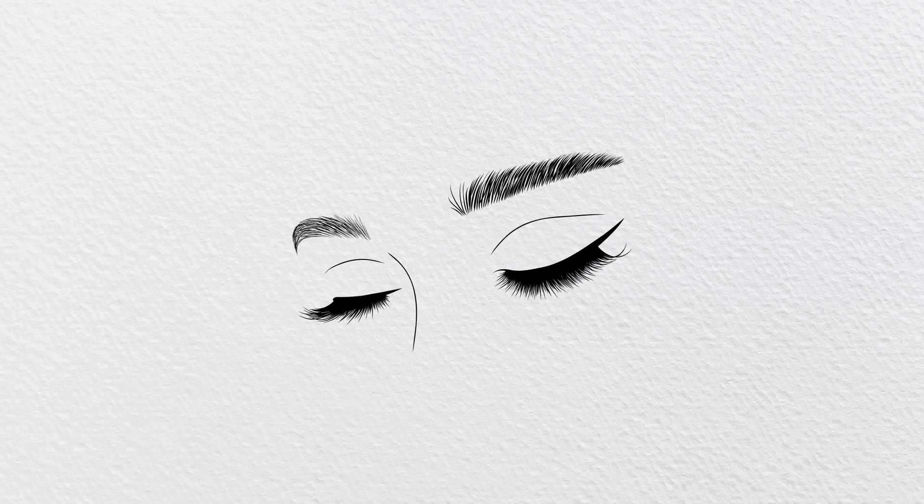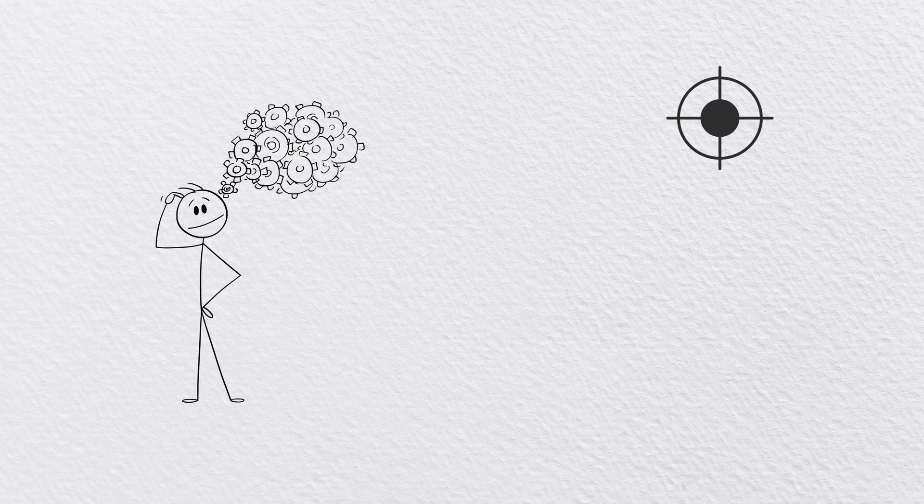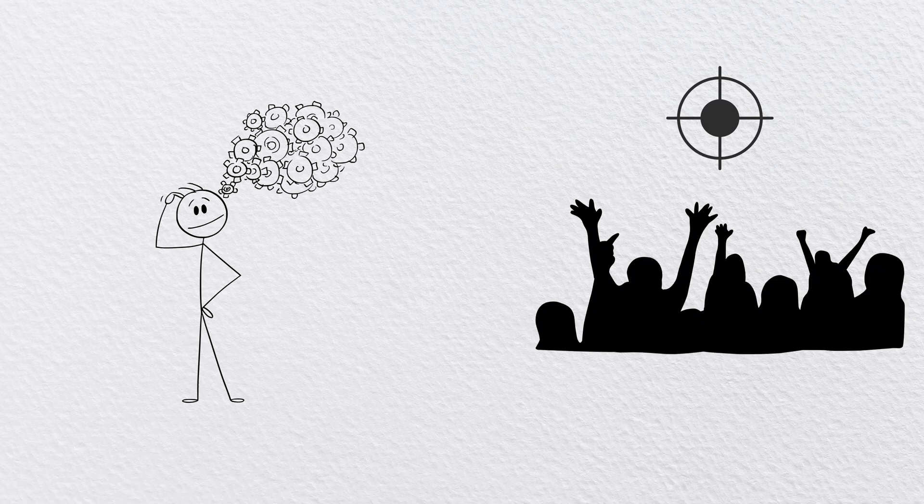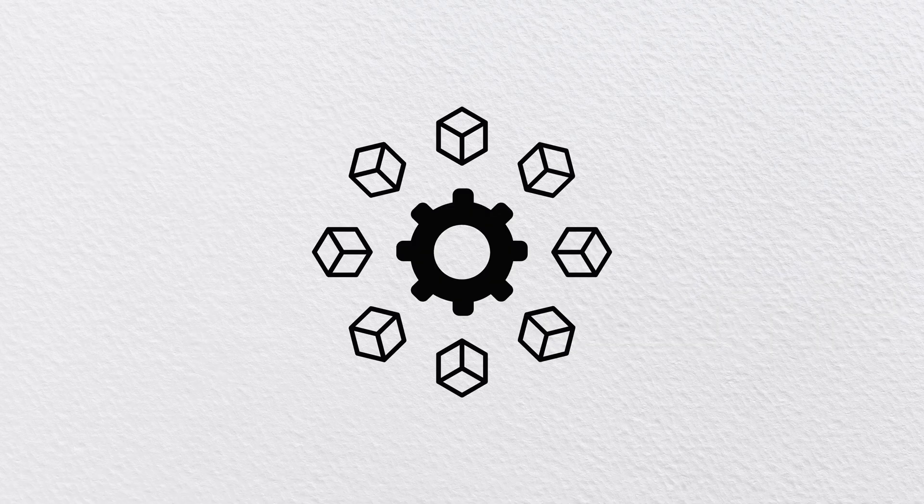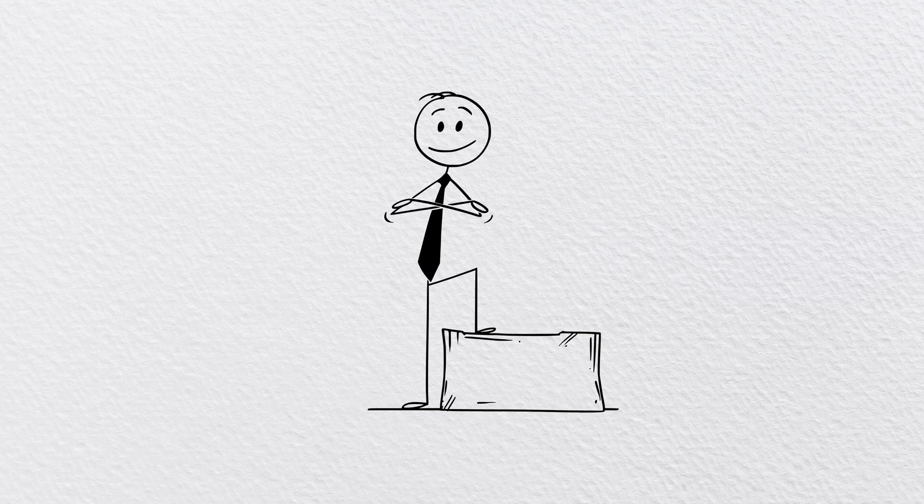Try this: close your eyes for 5 minutes. Picture yourself successfully completing a task. Imagine every detail, the sights, sounds, and emotions of success. This technique rewires your brain for confidence and improved performance.